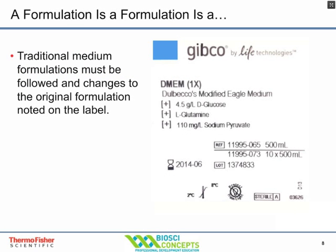When Delbecco formulated DMEM, any changes to that formulation need to be indicated on the bottle label. Most people now buy the 4.5 gram per liter glucose DMEM, because we're growing cells to higher density and more cancerous cell lines that need more glucose — so the label must say 'high glucose' if that modification was made. Similarly, DMEM did not originally have glutamine, so its presence must be indicated on the label.